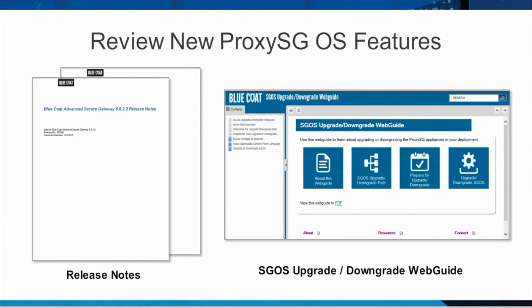If your old appliance was running on a pre-6.5.9.6 version of SGOS, you should review the features introduced between your current version and the new version, as well as the upgrade impact. The SGOS release notes are an excellent source of information on features. For the upgrade impact, please refer to the SGOS Changes in Behavior section in the SGOS Upgrade/Downgrade Web Guide.